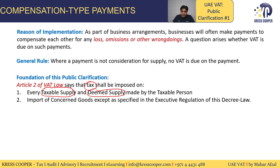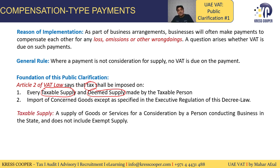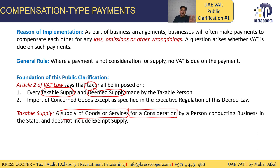The tax shall be imposed on taxable supply and deemed supply. A taxable supply is the supply of goods and services for consideration. If goods or services are supplied against consideration, it will be subject to tax. If goods or services are supplied without consideration, the question of deemed supply will arise. If consideration exists without any supply of goods and services, the amount will not be subject to tax.